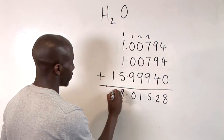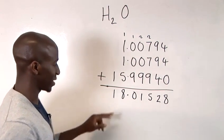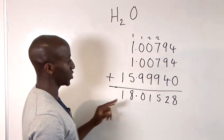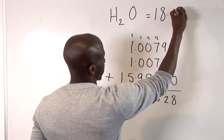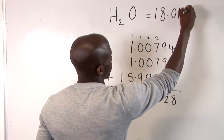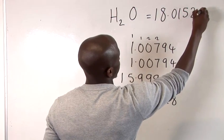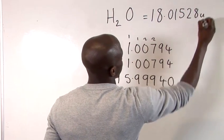So, basically, the molecular mass of H2O is 18.01528 U, okay?